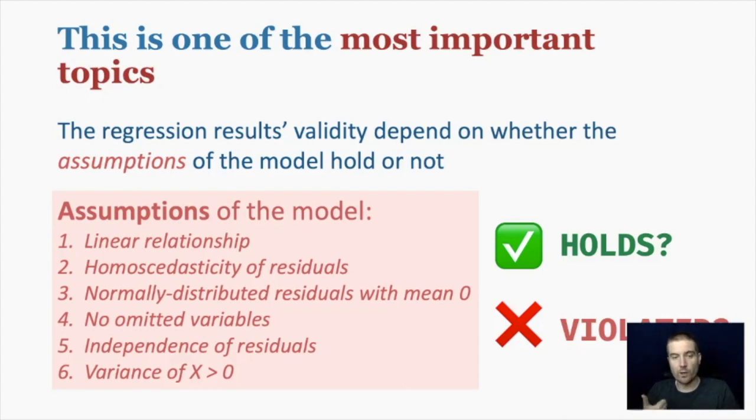One of them that we added was no omitted variables. We're going to talk about why that's important again. The fifth one, independence of residuals or independence of observations. And then the last one is another one I added is a variance of x needs to be greater than zero.